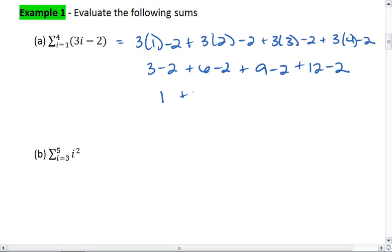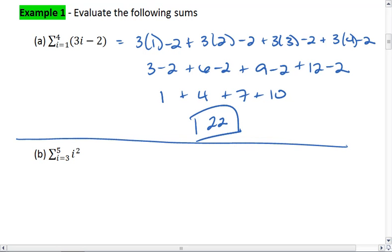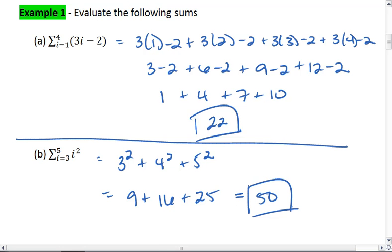I get 1 plus 4 plus 7 plus 10. I know that 1 and 4 are 5, plus 7 is 12, plus 10 is going to give me 22. Okay, let's look at the next one. I want to take a summation from i equals 3 to 5. So I take 3 squared plus 4 squared plus 5 squared. So I get 9 plus 16 plus 25. I know that 9 and 16 is going to be 25, so I get 50. And those are the two answers to the summation problems. Thank you.